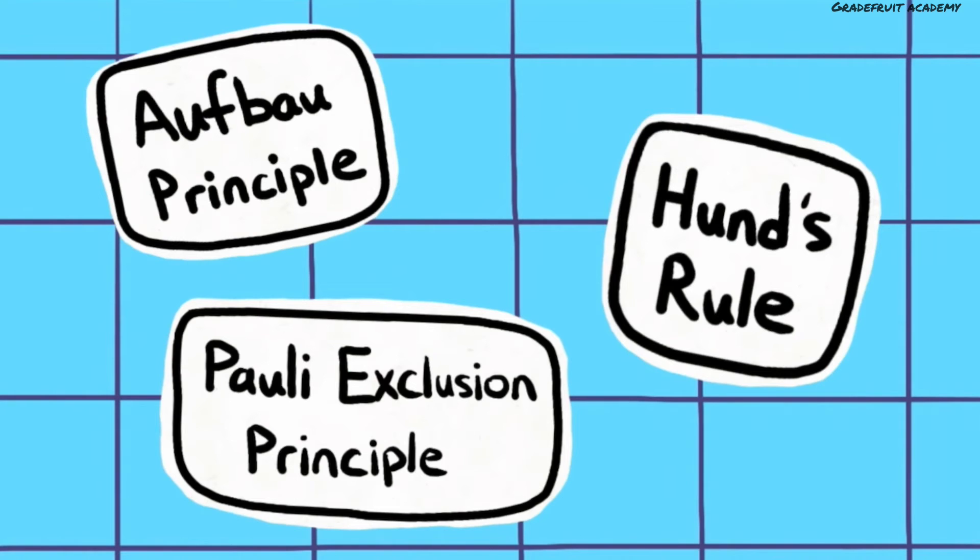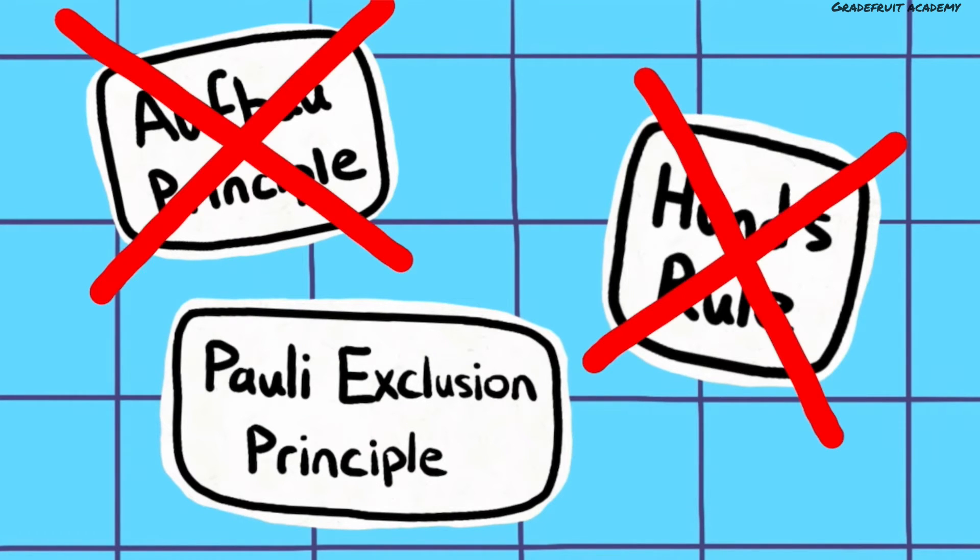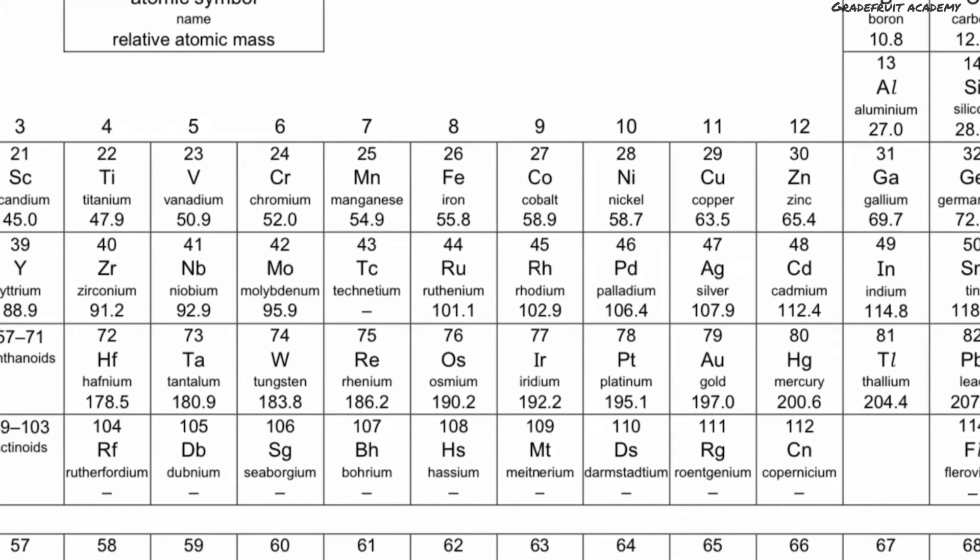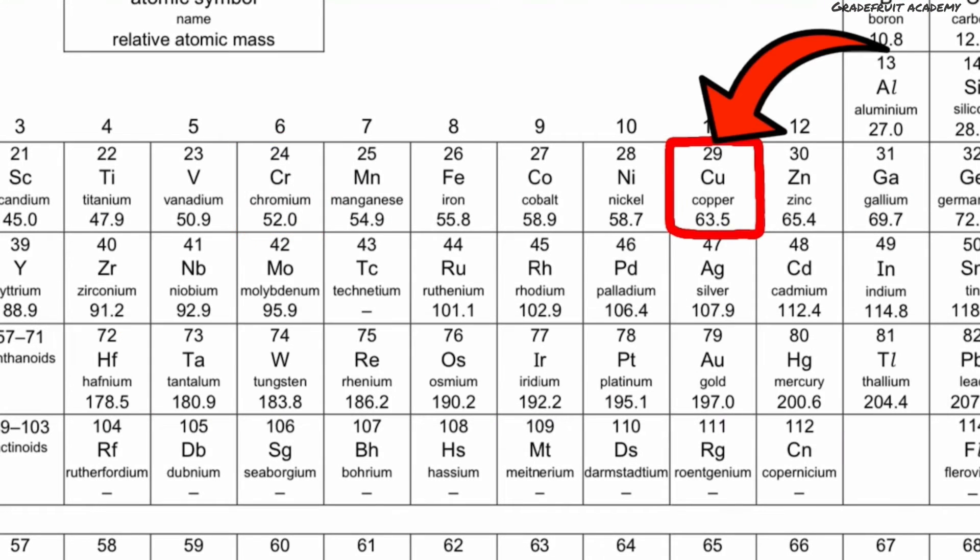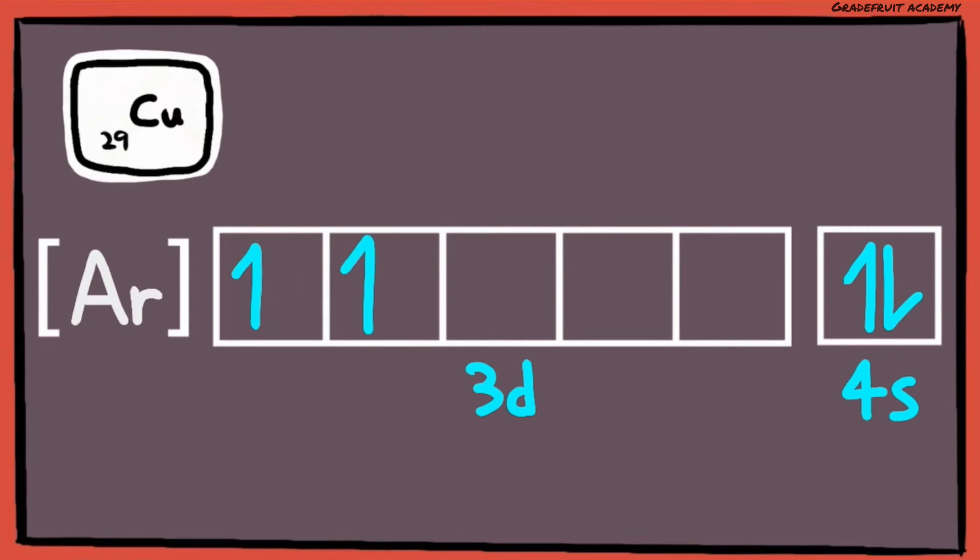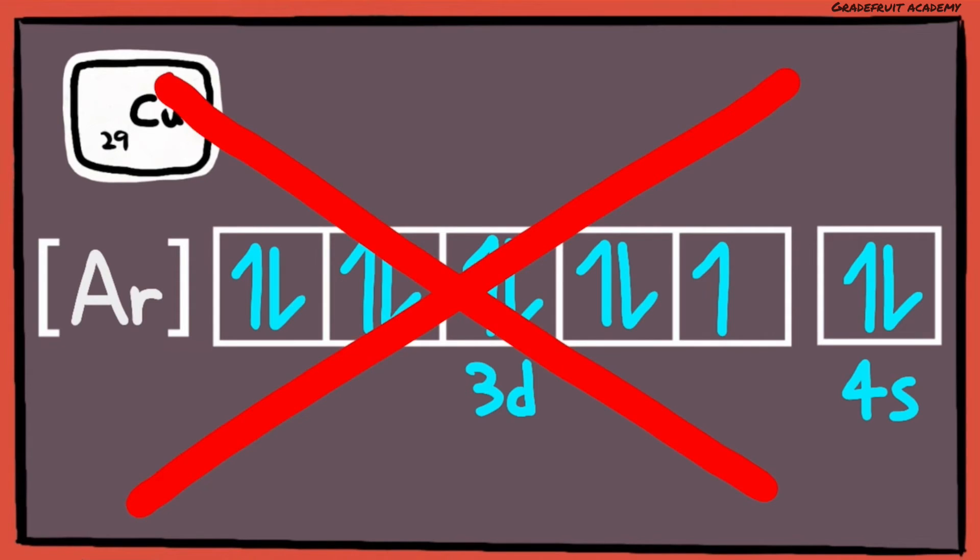But, not all elements or atoms play by the 3 golden rules. Copper and chromium have their own set of rules. Copper has 29 electrons, and we will expect the electrons to fill up the 4s orbitals first, right? Well, not for copper.